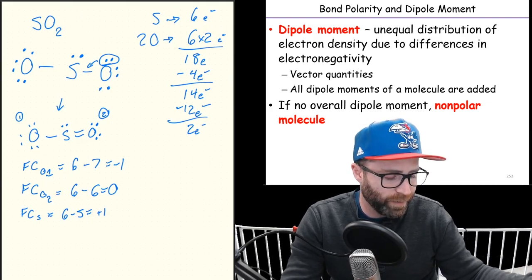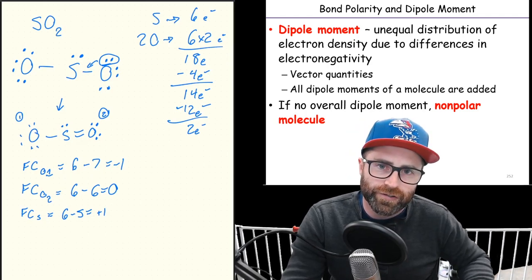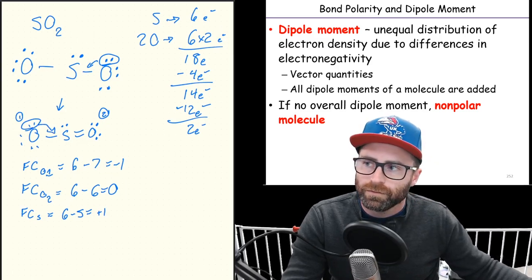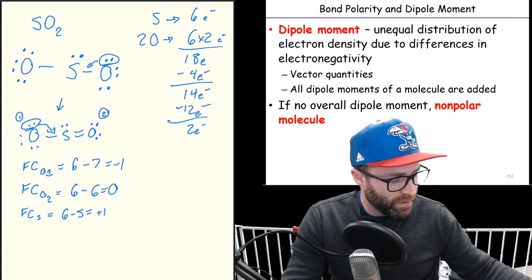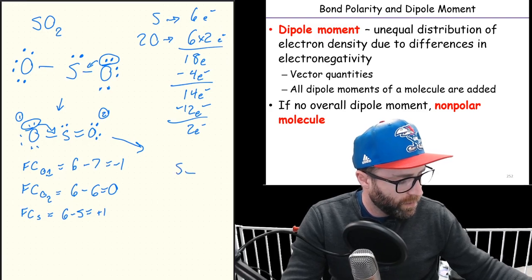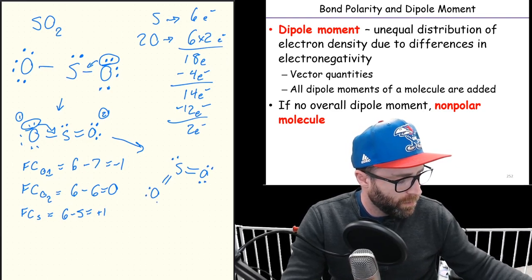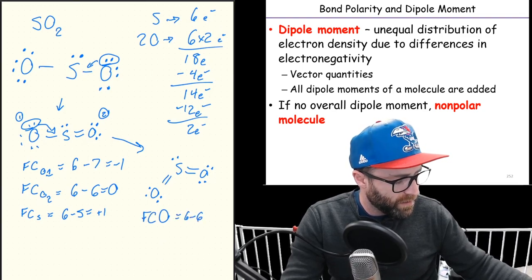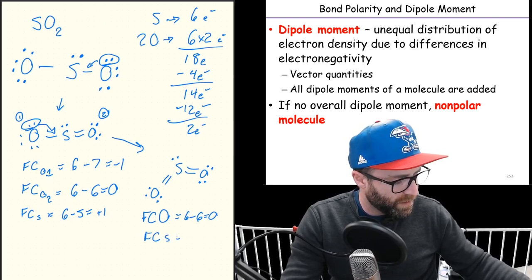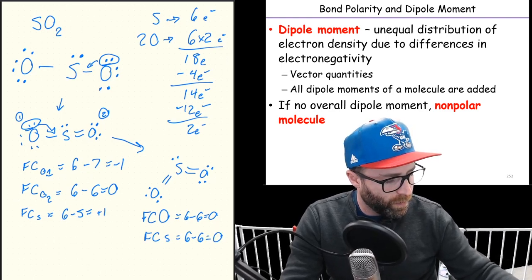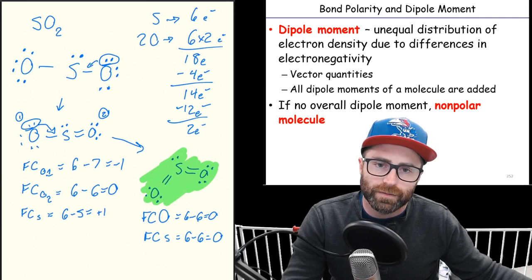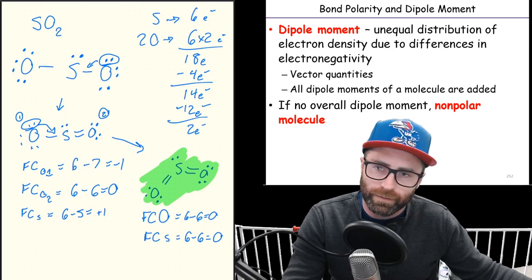Is there a way we can arrange the electrons that will still follow all of our electron placing rules but allow us to get rid of all of our formal charges? If I'm asking a leading question like that, there's a pretty good chance. Move a pair from oxygen one to a bond with sulfur. Now our oxygens are equivalent to one another, so our formal charge for our oxygens will be six minus six - zero. And for the sulfur, six minus six is zero as well. So this structure is our preferred structure for sulfur dioxide.